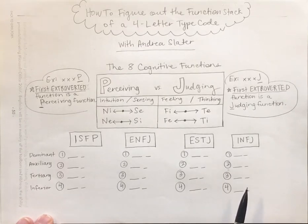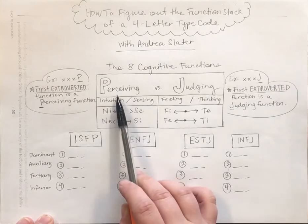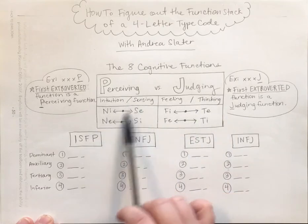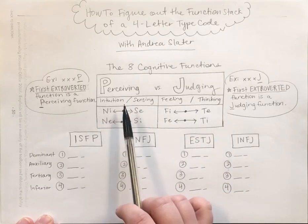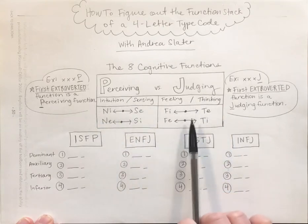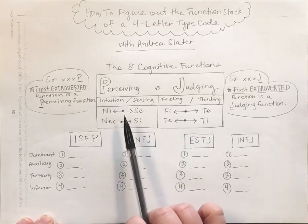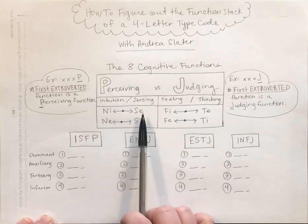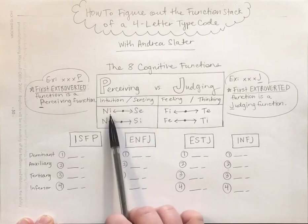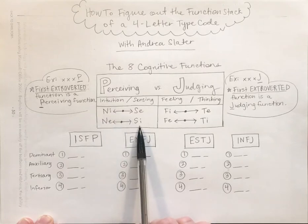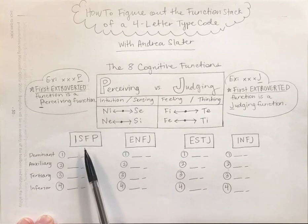The eight functions are broken down into perceiving functions and judging functions, and you're going to use one pair of perceiving functions and one pair of judging functions. The perceiving functions are intuition and sensing, and they'll either be introverted — like introverted intuition and introverted sensing — or extroverted, like extroverted sensing and extroverted intuition.